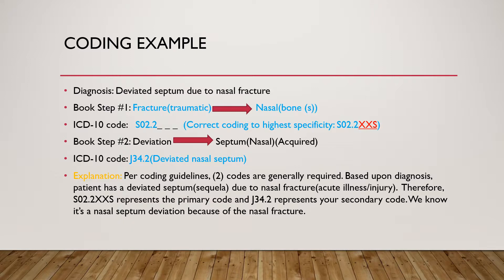Our ICD-10 code should be S02.2, and we have three placeholders that are blank because this is a seventh-digit code. When we code it to the highest specificity, our correct code should be S02.2XXS. The Xs represent the fifth and sixth-digit placeholders because there isn't a specific number for those categories, but because this is a seventh-digit code, we want to make sure those placeholders are filled.